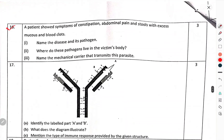Section D — Case-based question: A patient showed symptoms of constipation, abdominal pain, and stools with excess mucus and blood clots. Name the disease and its pathogen. Where do these pathogens live in the victim's body? Name the mechanical carrier that transmits this disease.